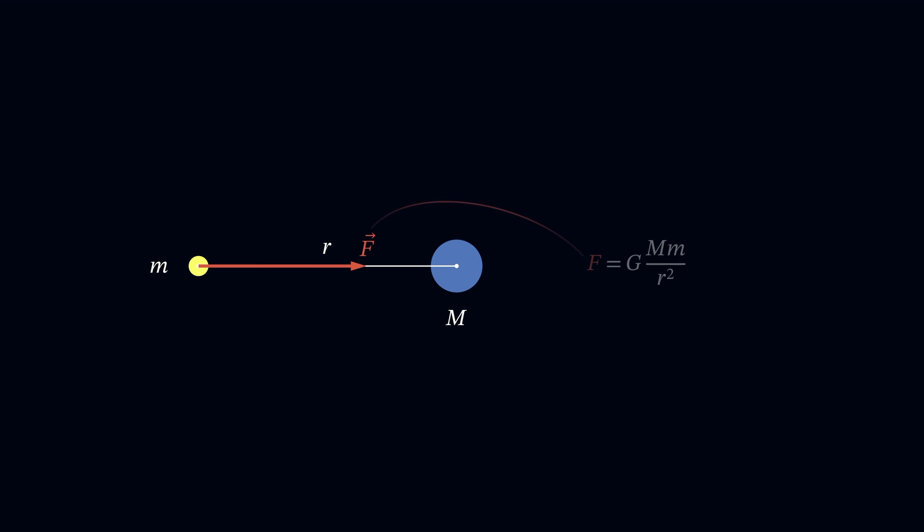A point is attracted to a sphere according to Newton's law of gravity. Let's split the point into halves and separate them. Work is done as the points move further from the sphere.